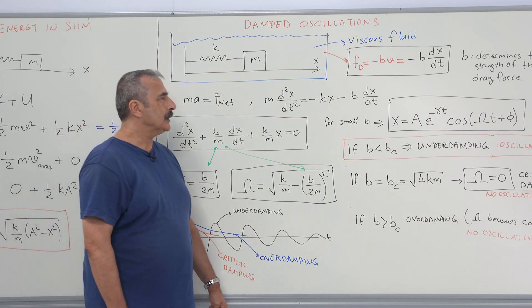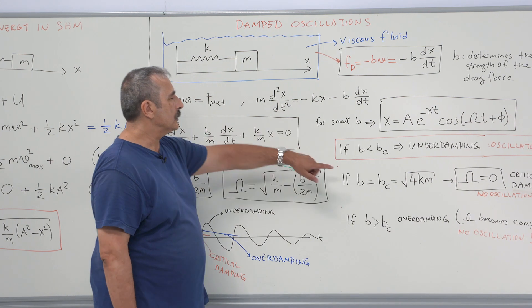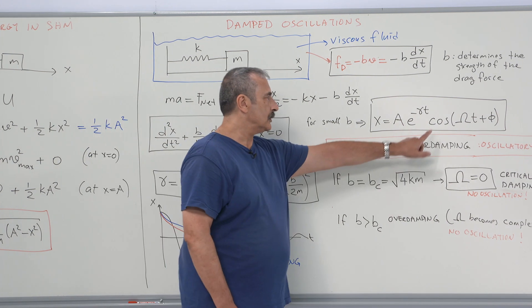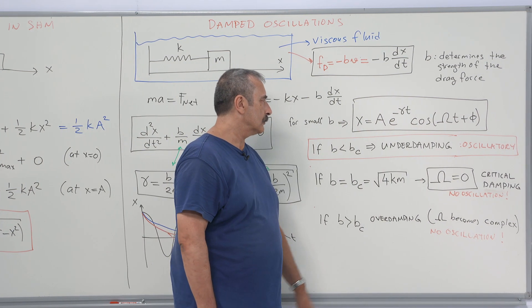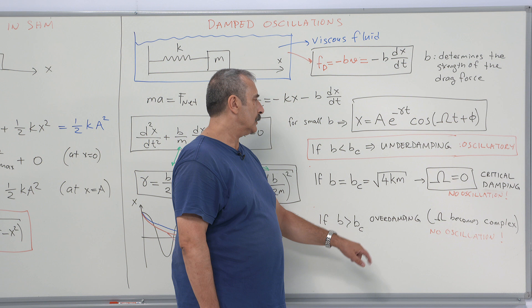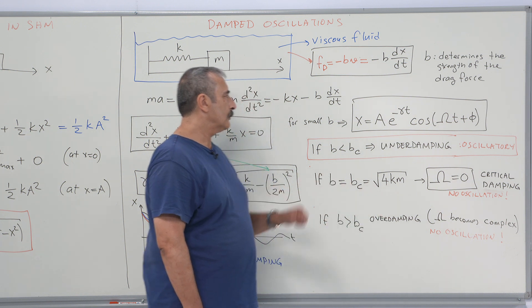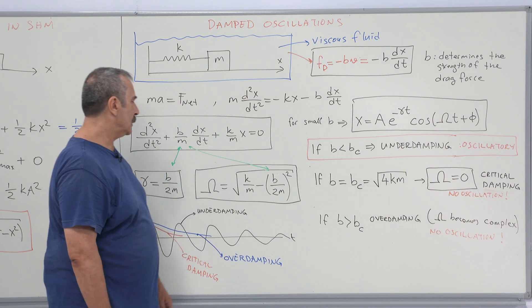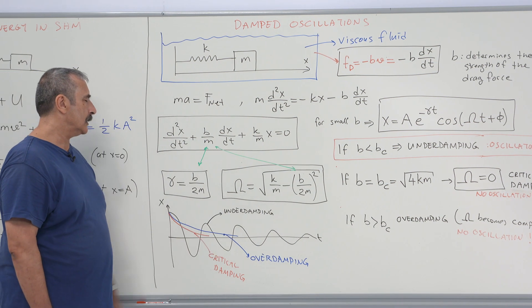For critical damping, there is also no oscillatory behavior — the system will approach its equilibrium position in an exponentially decaying form.